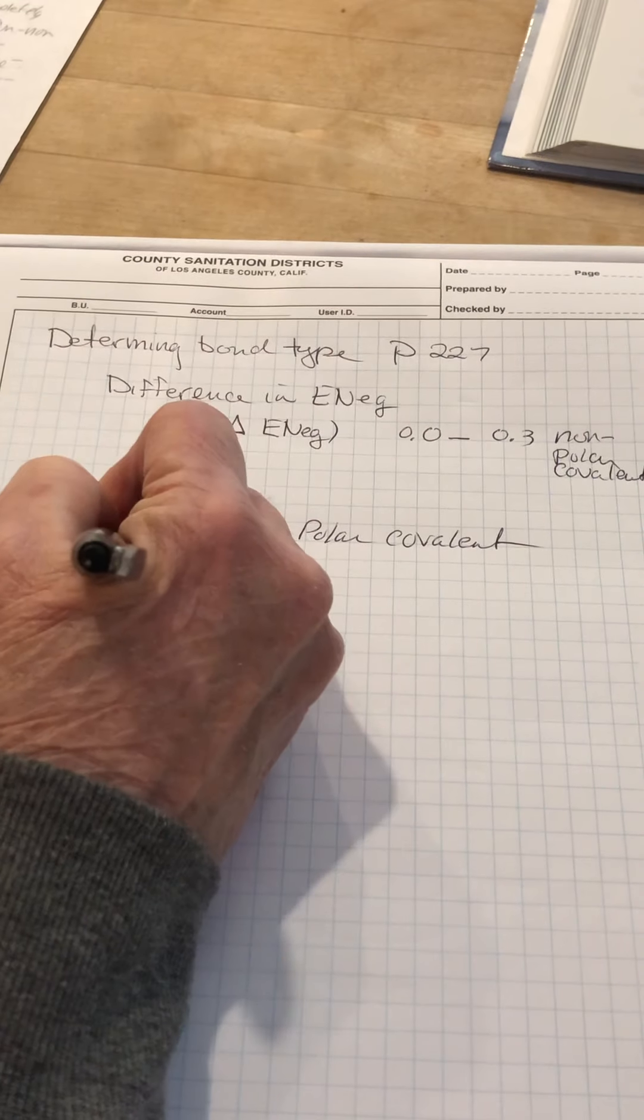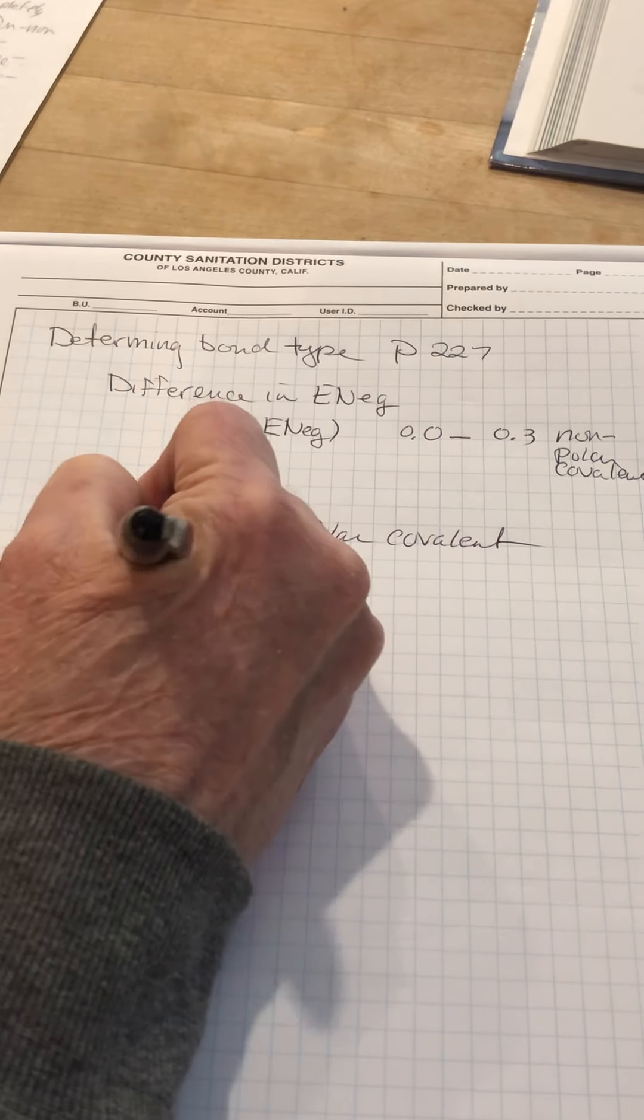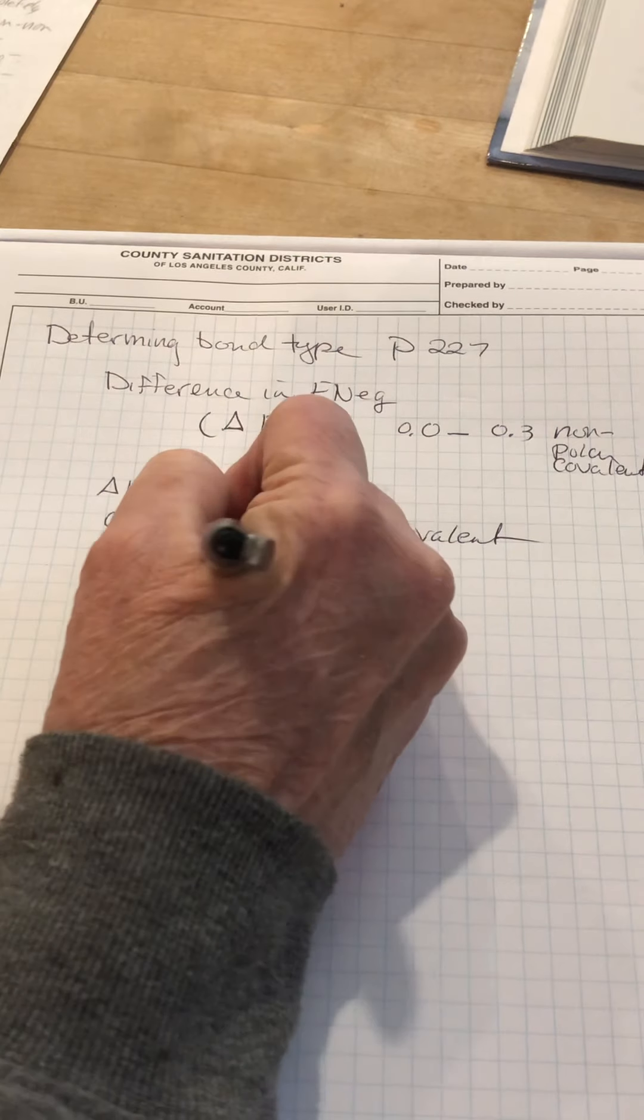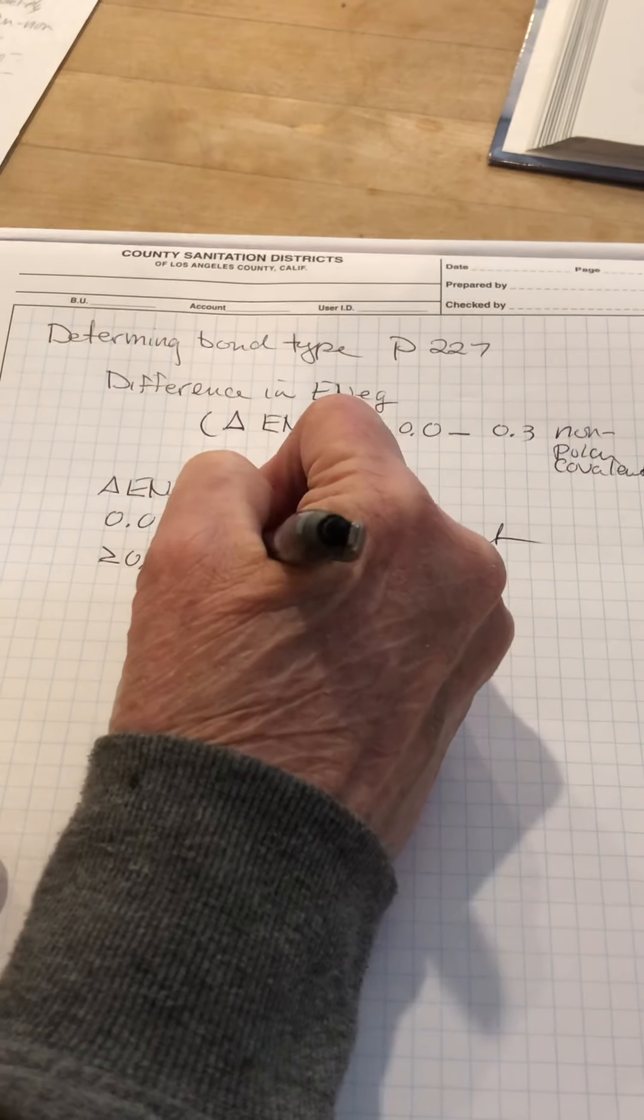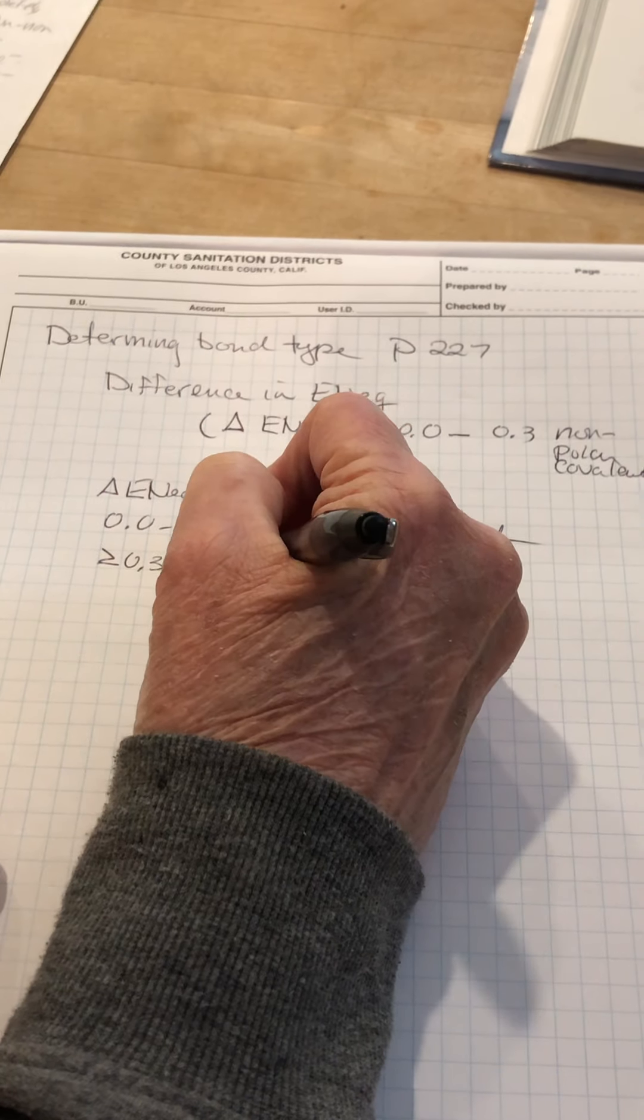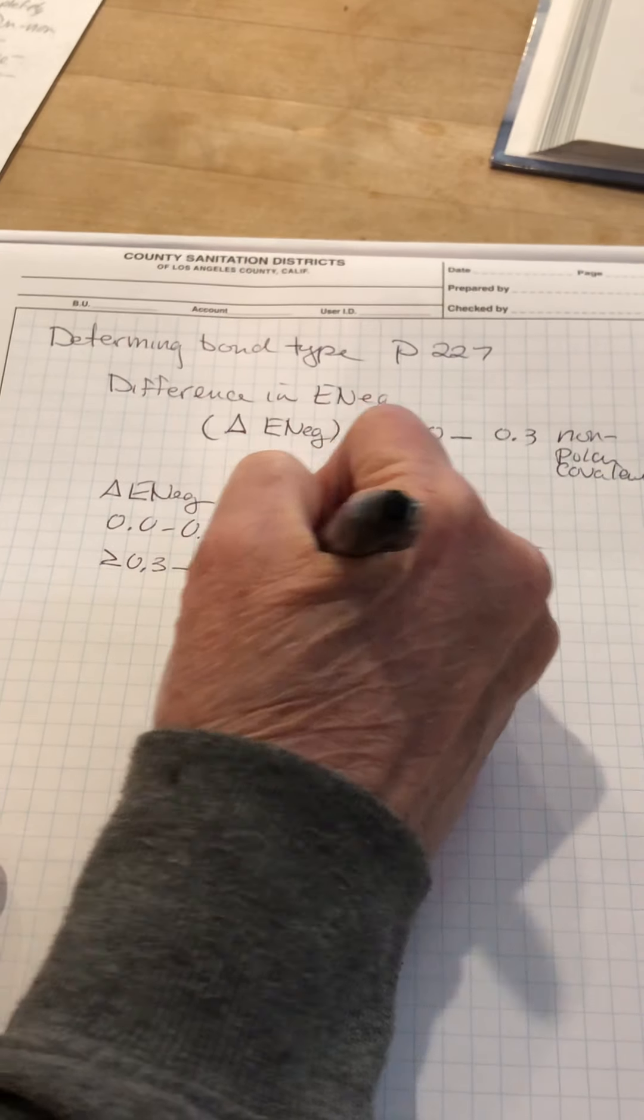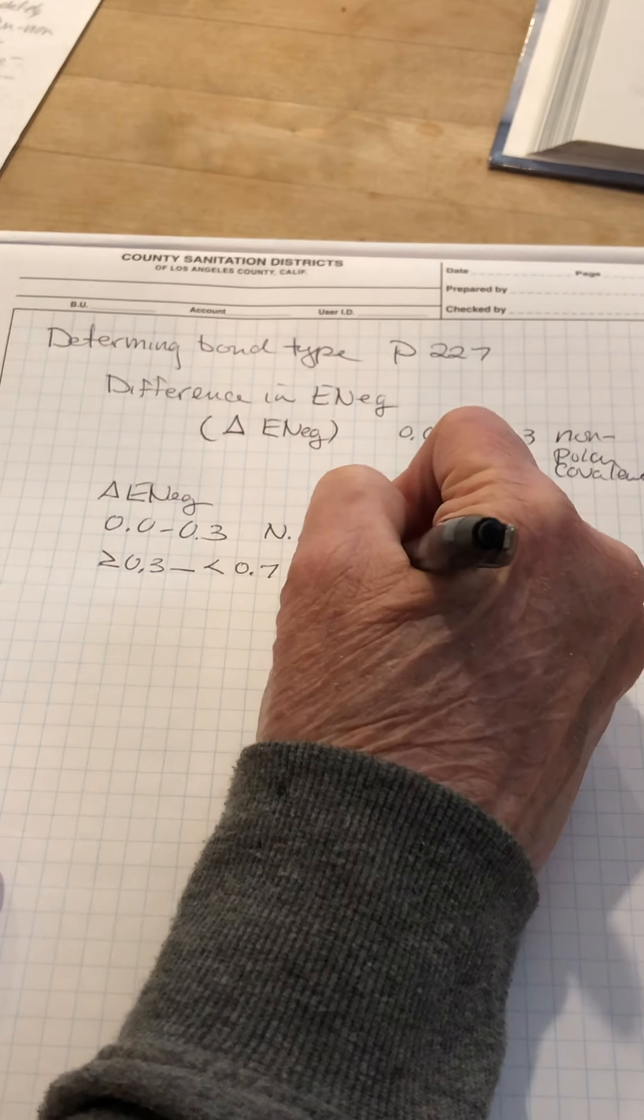If the electronegativity difference is greater than or equal to 0.3 and less than 2.0, we have what's known as a polar covalent bond.